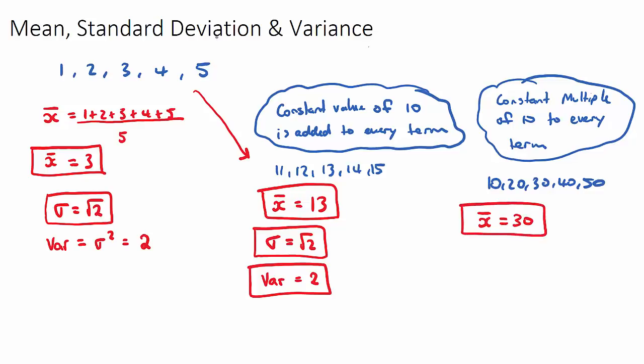Now, will the standard deviation still be root 2? Well, our data actually has been spread out. They're no longer one away from each other. Now they're 10 away from each other. So if our data is multiplied by a constant here of 10, the standard deviation does get multiplied by that constant of 10. So the new standard deviation will be 10 root 2, because we've multiplied the original standard deviation by 10.